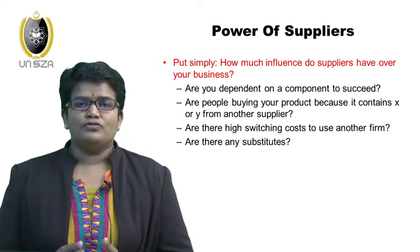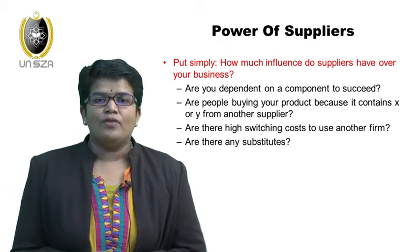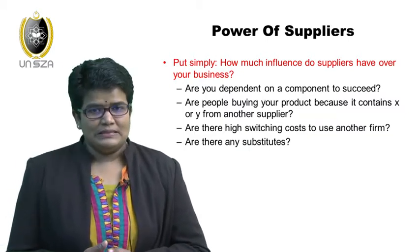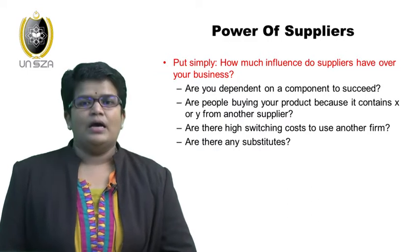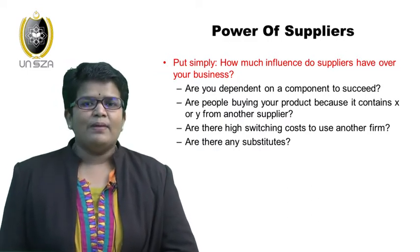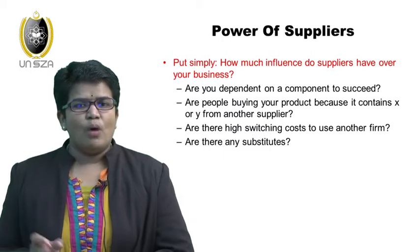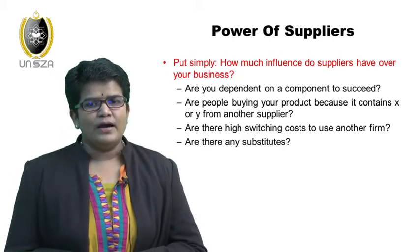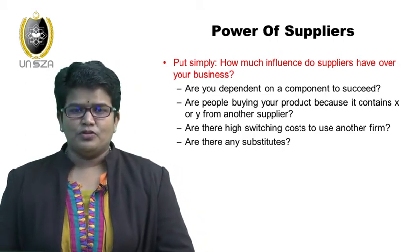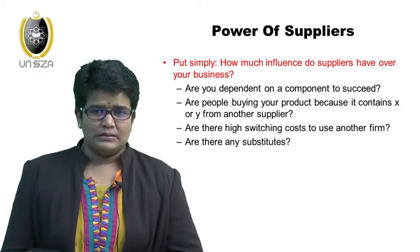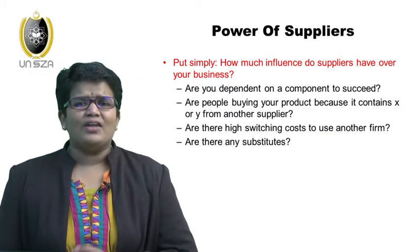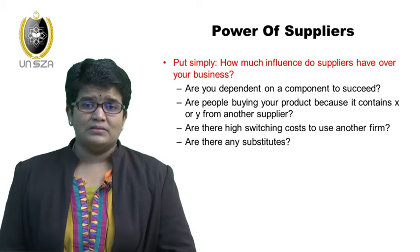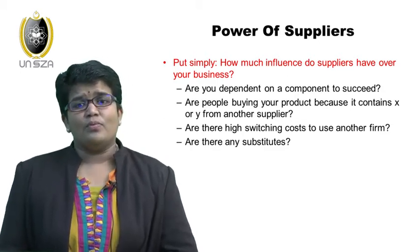To assess supplier power, you need to answer several questions: Are you dependent on a specific component to succeed? Are people buying your product because it contains something from another supplier? Are there high switching costs to use another firm? Are there any substitutes? If you are totally relying on your supplier, then the supplier has more bargaining power and the raw materials price is not controlled by you.